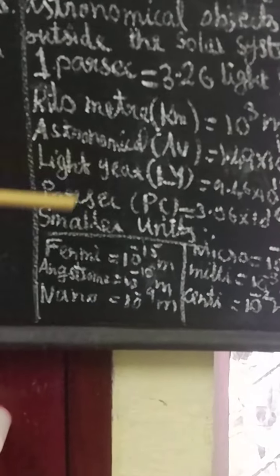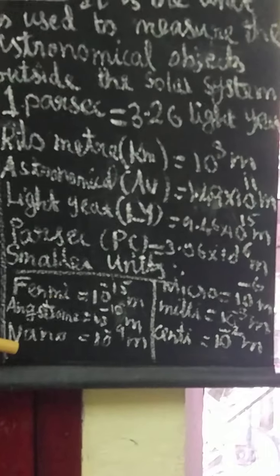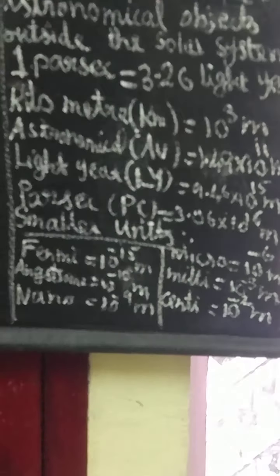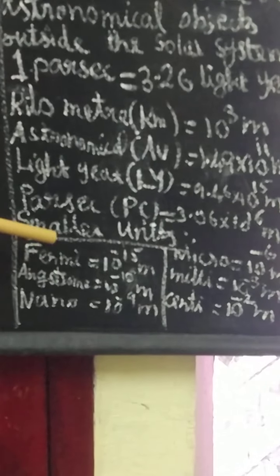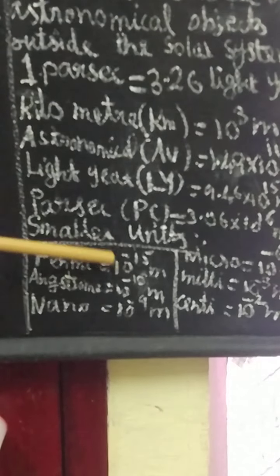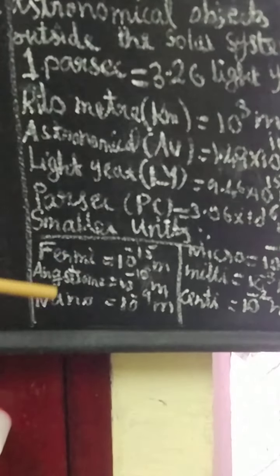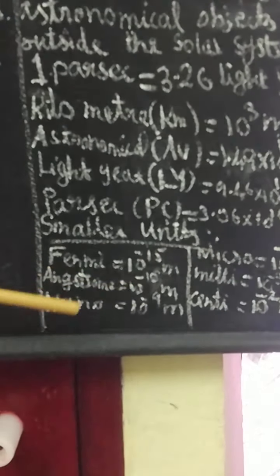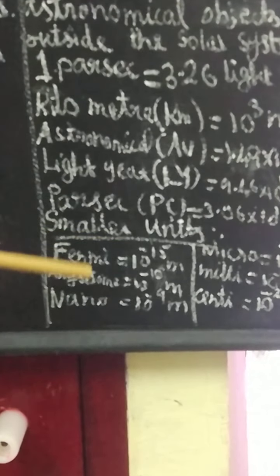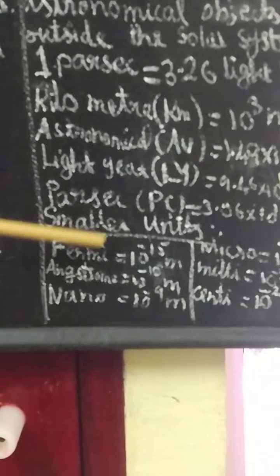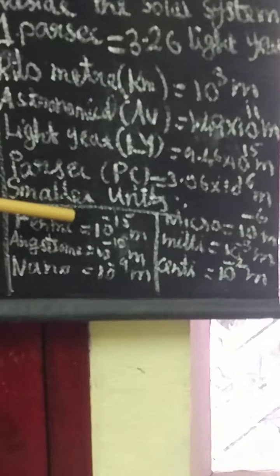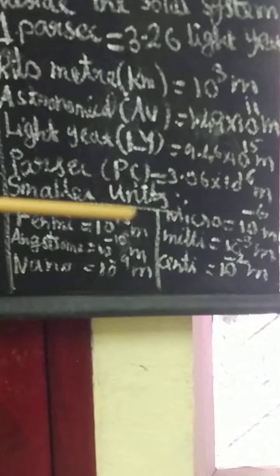Now, the smaller units. The smaller units are: fermi, angstrom, nano, micro, milli, and centi. Fermi is equal to 10 to the power minus 15 meters. The minus sign denotes very small units. Angstrom is equal to 10 to the power minus 10 meters. Nano is equal to 10 to the power minus 9 meters. These units are used to measure very tiny objects.